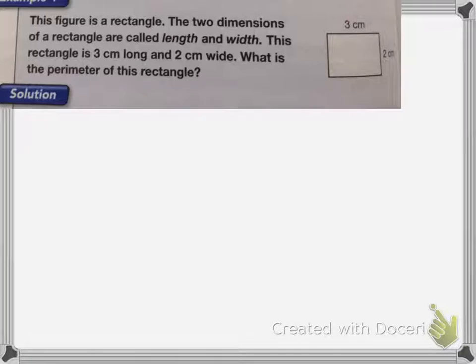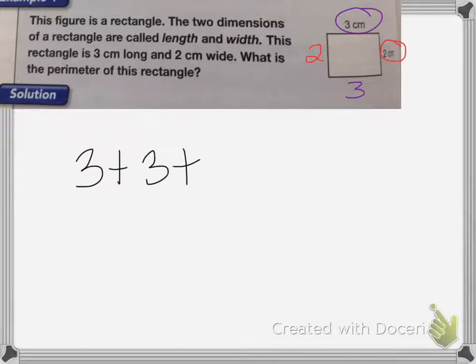So we know to find the perimeter, you need to add up the lengths of all the sides. Since it's a rectangle, that means the opposite sides have to be the same. So if this side is equal to 2 centimeters, that means the opposite side is also equal to 2. If this side is equal to 3, the opposite side has to be equal to 3. So to find the total perimeter, I'm going to add up 3 plus 3 plus 2 plus 2, which is equal to 10 centimeters.